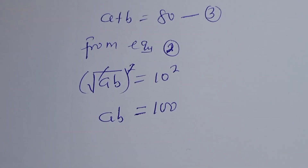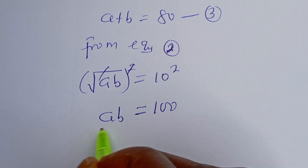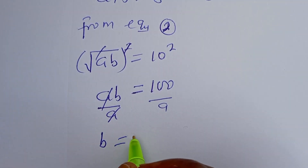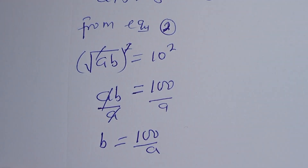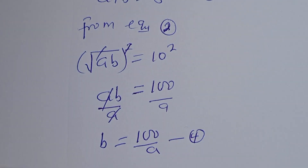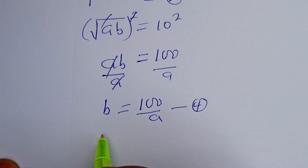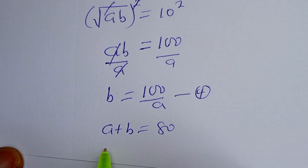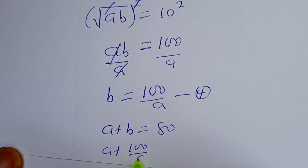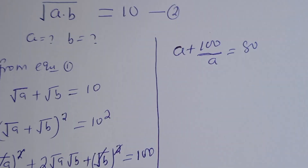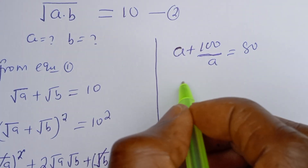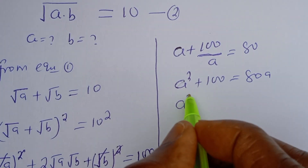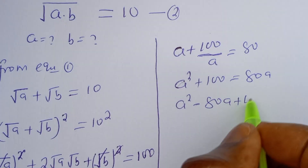Then we can divide both sides by A. This gives B is equal to 100 over A. Let's call this equation 4. We can now substitute equation 4 into equation 3. That is, A plus B equals 80, so A plus 100 over A equals 80. If we multiply all through by A, we have A squared plus 100 equals 80A.